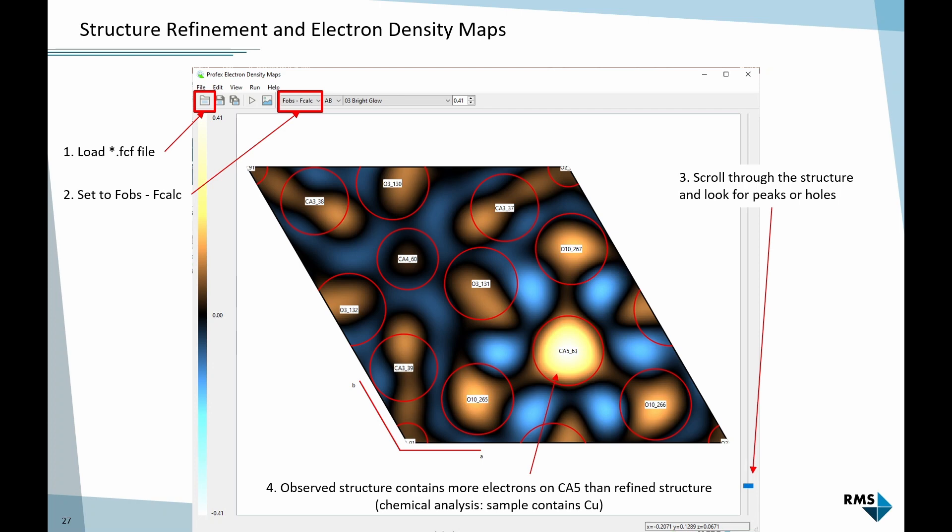Then I can load one of these additional output files, the fcf file, with the left button. And then I can select which kind of electron density I want to draw. I have three options. Either I can show the measured electron densities from my measured scan or the calculated ones from my calculated model scan. Or, and that is the most interesting one, I can show the difference between the two. This will show me a map with residual electron densities, things I have not fitted in my model.